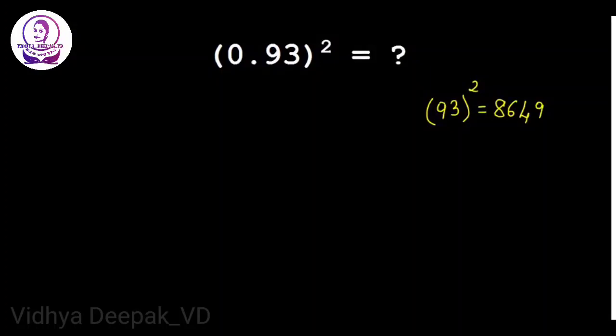Now let's see how to implement this technique in decimal problems. So here we have 0.93 the whole square. Usually how will we do this? 0.93 into 0.93.